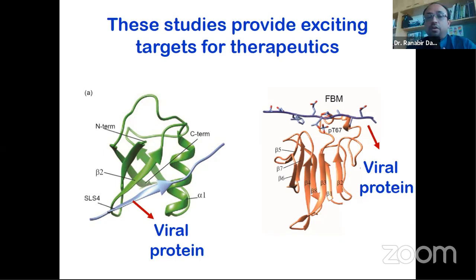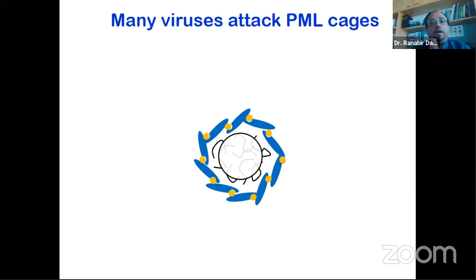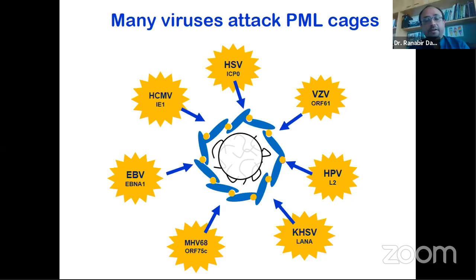These structures we've solved show how the viral protein binds to the human protein. When we know how the viral protein binds to the human protein, we can find areas where we can inhibit this process, inhibit the interaction between viral and human proteins, and stop the virus from replicating effectively. This is not the only virus that attacks PML cages — many viruses attack PML cages because their genomes get trapped inside them. Whatever we understand from herpes simplex virus could also be valid for other viruses that attack PML cages.